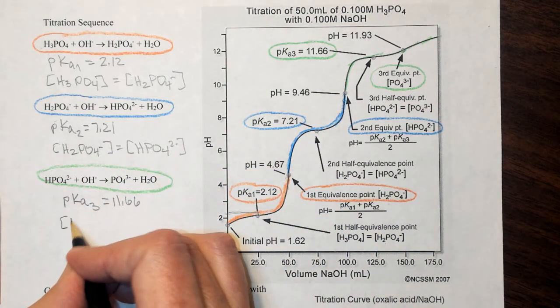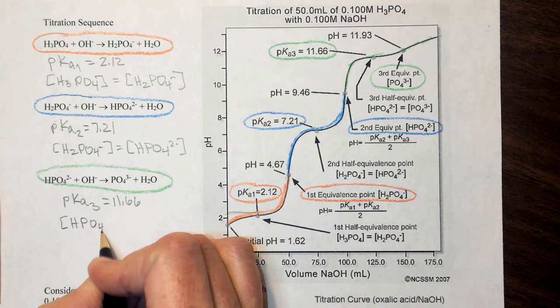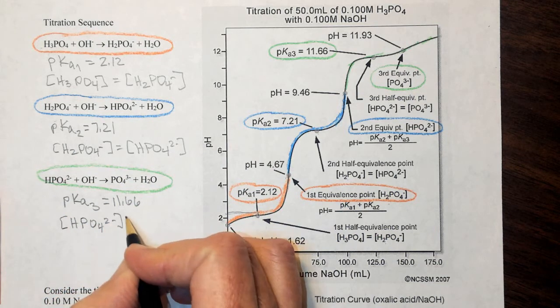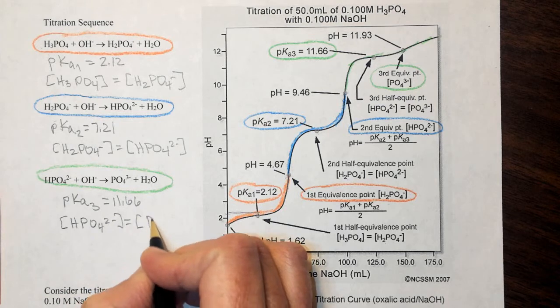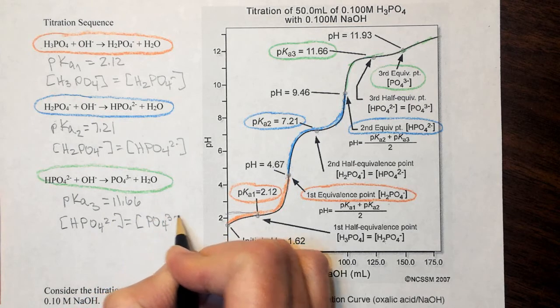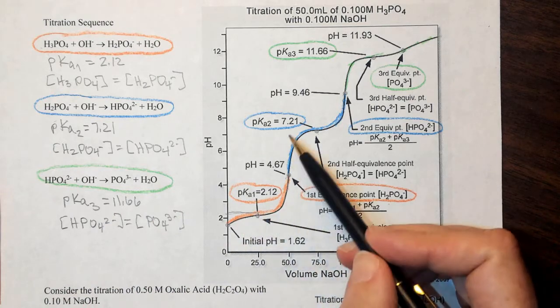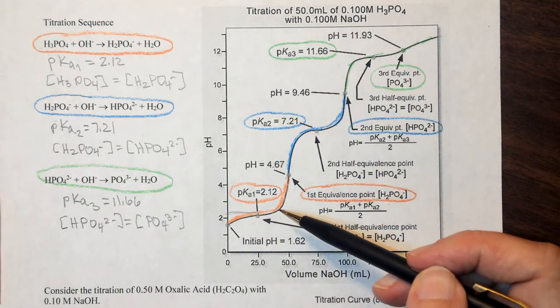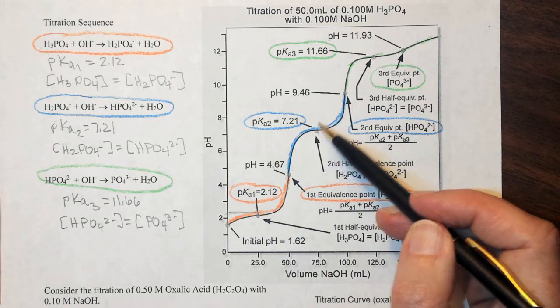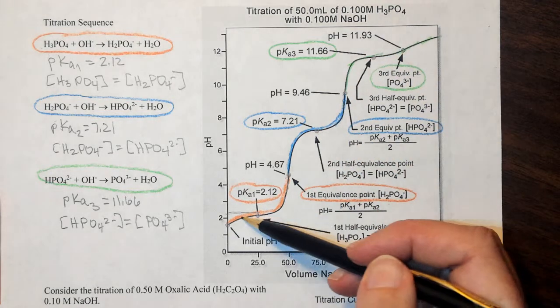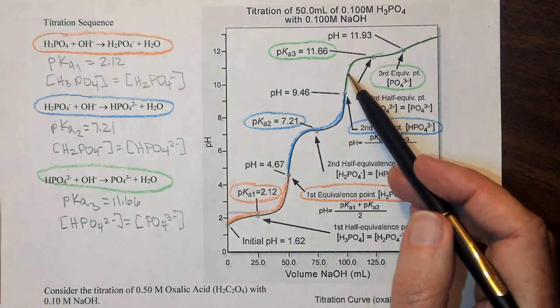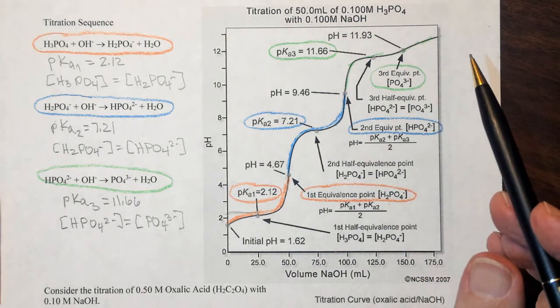So we have HPO4 2 minus concentration is going to be equal to the PO4 3 minus concentration. So you should be able to look at a curve like this and estimate each one of the pKa values and identify which species are present at each portion along the curve.